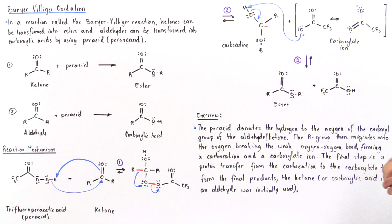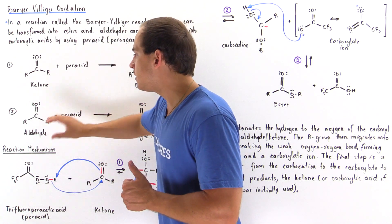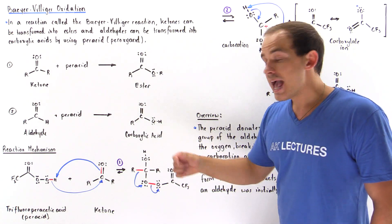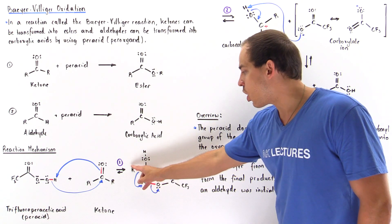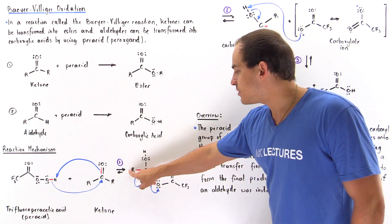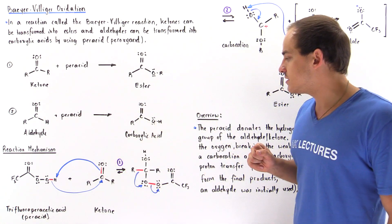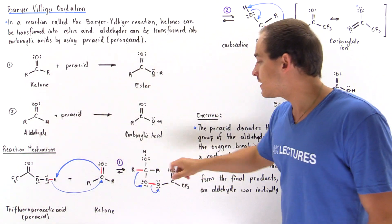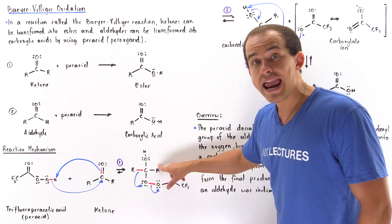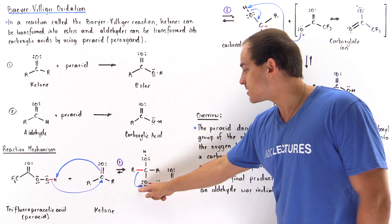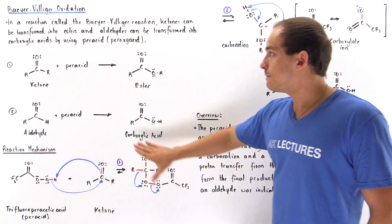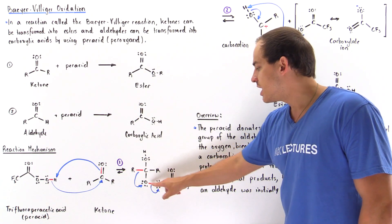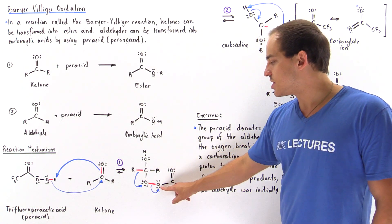In step two, this is where the difference between the ketone and the aldehyde takes place. For a ketone, either R group can migrate and break away to form a bond between the carbon of that R group and the adjacent oxygen. Since we're assuming the two R groups on the ketone are identical, it doesn't matter which one migrates. If we use an aldehyde instead, the R group on one side is replaced by an H, and it is the H that migrates to form a bond with that oxygen.